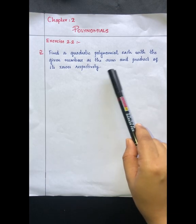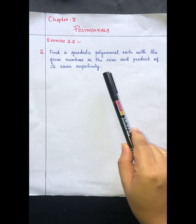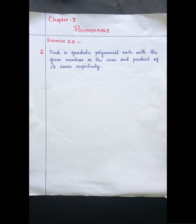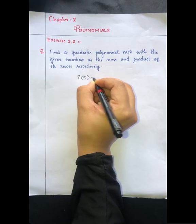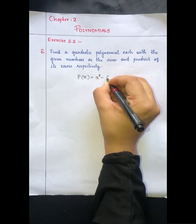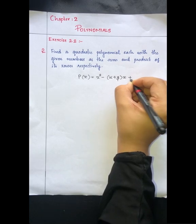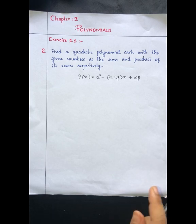The second question asks us to find a quadratic polynomial, each with the given numbers as the sum and product of its zeros respectively. We need to find the equation by substituting the sum of zeros and product of zeros into the quadratic polynomial formula.